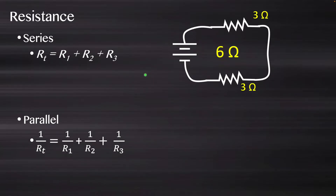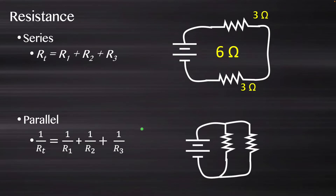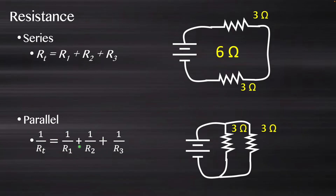It gets a bit more complex when we go into parallel. This may look like an intimidating formula, but it's: one over R-total equals one over R1 plus one over R2 plus one over R3, and so on for how many resistors you have. Sometimes it helps to imagine the whole section with two resistors in parallel as one resistor — that's what we're really calculating here, how much resistance would come from that.